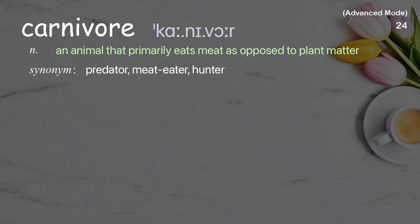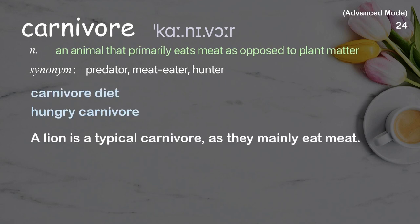Carnivore: An animal that primarily eats meat as opposed to plant matter. Examples: carnivore diet. A lion is a typical carnivore, as they mainly eat meat.